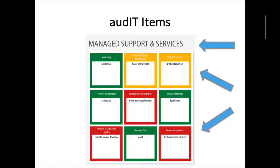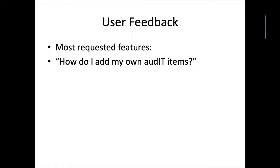Some audit items have default predefined summary statements. For server, for example, we've created a predefined summary statement that says 'server is five years old and out of warranty, needs to be replaced.' You can choose that as a canned statement or type your own. There are more than nine audit items available in each category when you start. You decide which nine you want — nine is both the minimum and the maximum. You can't have more, you can't have less.